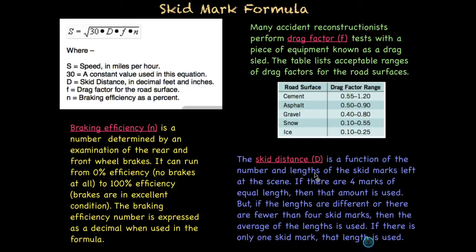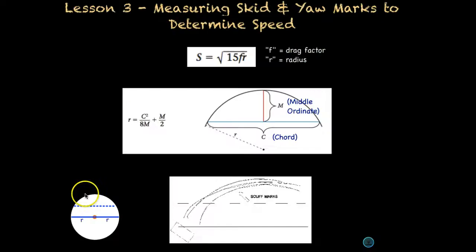Finally, we have skid distance. And this is a function of the number in length of the skid marks left on the scene. So if there are four marks all of equal length, then that's the length that is used. If the lengths are different, or there are fewer than four skid marks, then the average of the lengths is used. If there's only one skid mark, then they use that. So that's going to be important for your notes when you're doing your practice problems. So make sure that you write down that if we have different lengths, we take an average. If they're all the same, then we go ahead and use that.